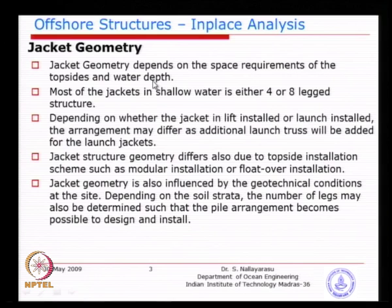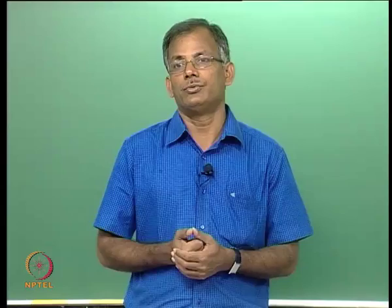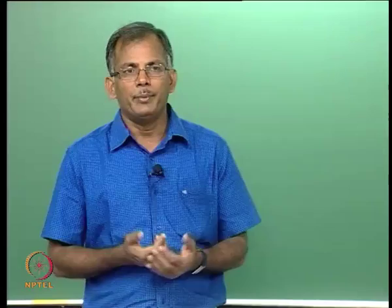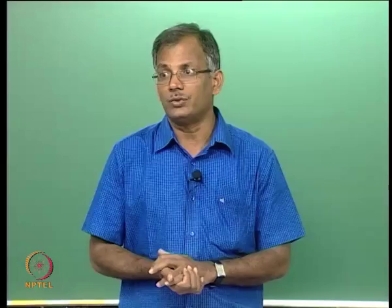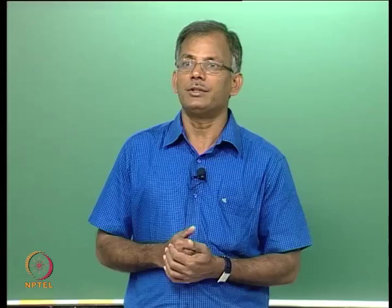The jacket geometry depends on the space requirements for the top sides and the water depth. The larger the footprint of the top sides, you will definitely require a bigger jacket. And the deeper the water depth, the base needs to be larger. For a 100-meter water depth, you may have a base of 50 meters by 50 meters, which gives stability during installation as well as during service. But at 1,000-meter water depth, the required base size makes you question whether a jacket is even suitable.